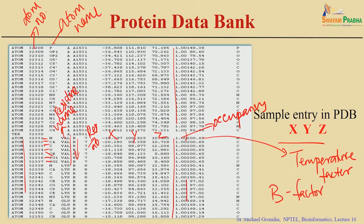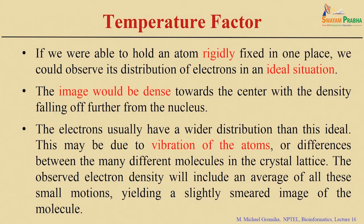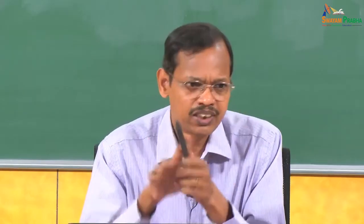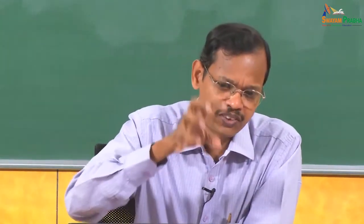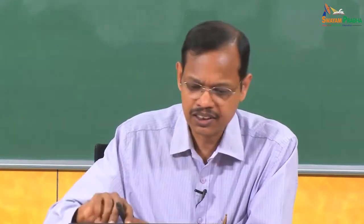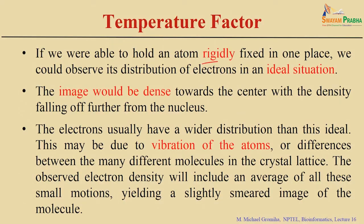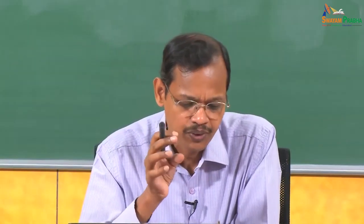The temperature factor will tell you the flexibility of each atom. How do we get this? If you are able to fix the atom within the electron density map — if the atom is fixed within that space, they are rigid and do not disturb the electrons. In this ideal situation, you can get a dense distribution within that particular conformation, meaning they are very rigid.